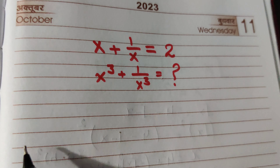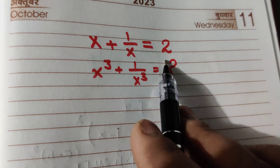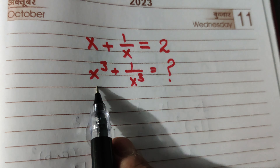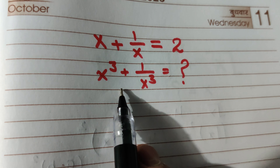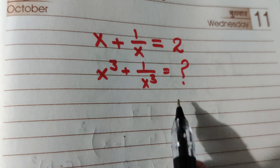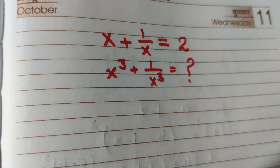The question is: x plus 1 by x equals 2. Find the value of x cube plus 1 by x cube.